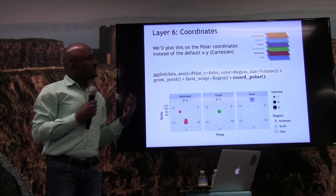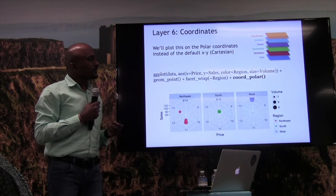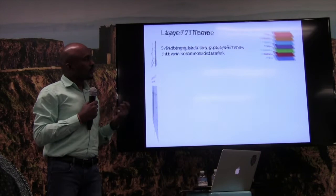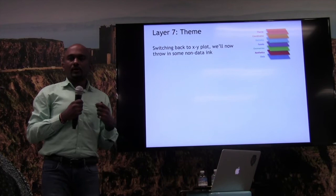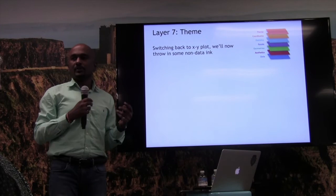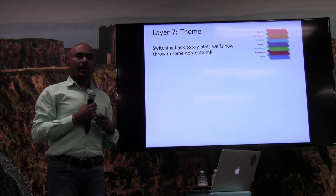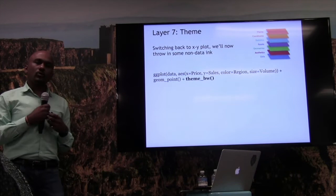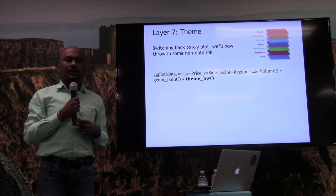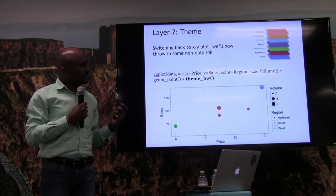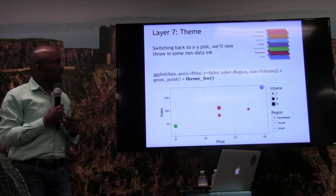We've seen 6 layers, all representations of data or transformations. What is also very important is non-data ink. Non-data ink could be the chart title, axis titles, background colors, and other narrative elements. Data stories need contextual text around them — charts alone will not do. That is where the theme comes in, which is the 7th layer. As a simple example, we change the background color from the default grayscale to a black-and-white theme. When we add this, the plot changes and looks much cleaner.